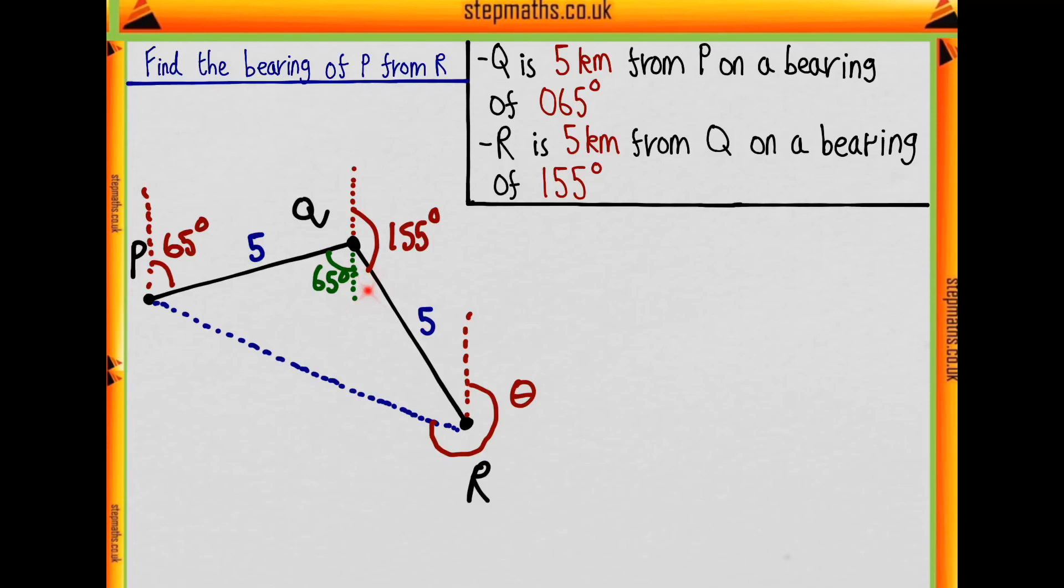You see this angle here? We know what that is. We'll fill that in because that's got to be 25, since angles on a line add up to 180 degrees. If this is 25, then this must be 25 because these two lines are parallel. We've got a lot of information here. We realize if we can figure out this angle, we can work out theta, because theta plus this angle plus 25 is 360 degrees.